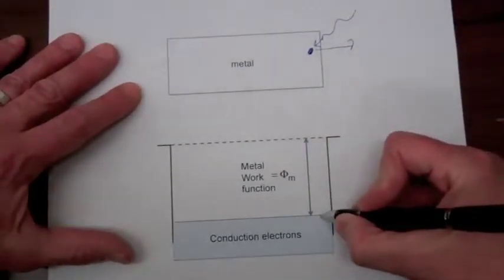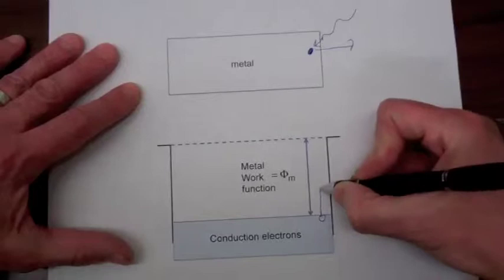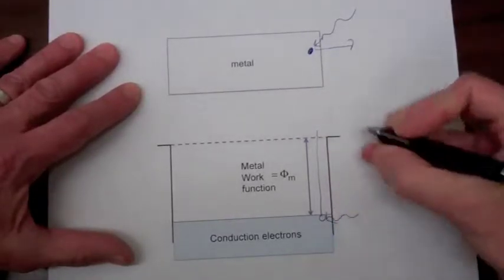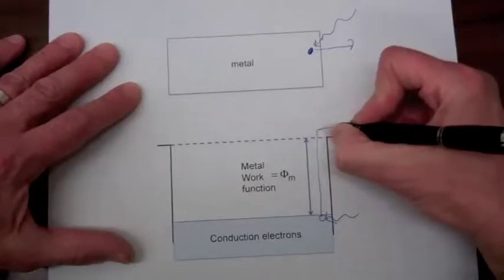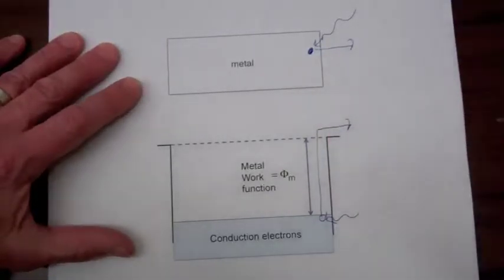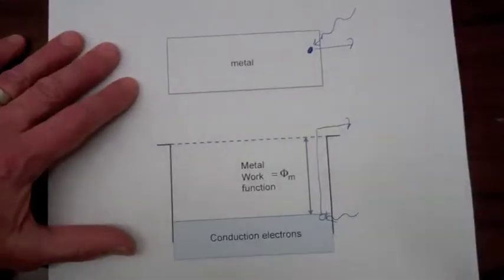So on the energy band diagram, it would be an electron gaining energy from the light, and the energy being such that it can get over this barrier and be emitted into the region outside the metal.